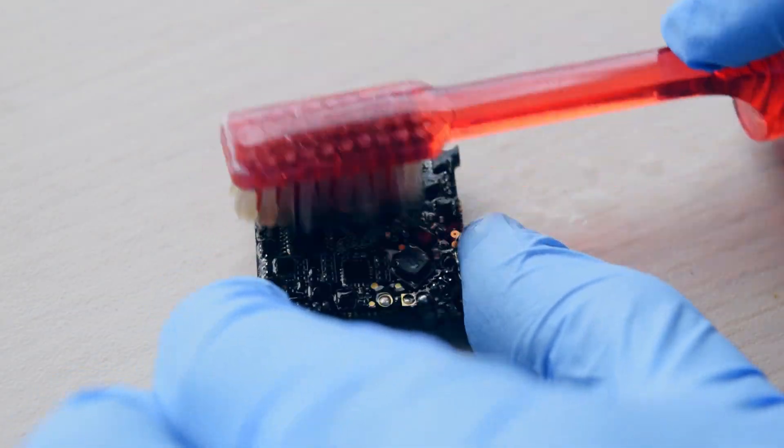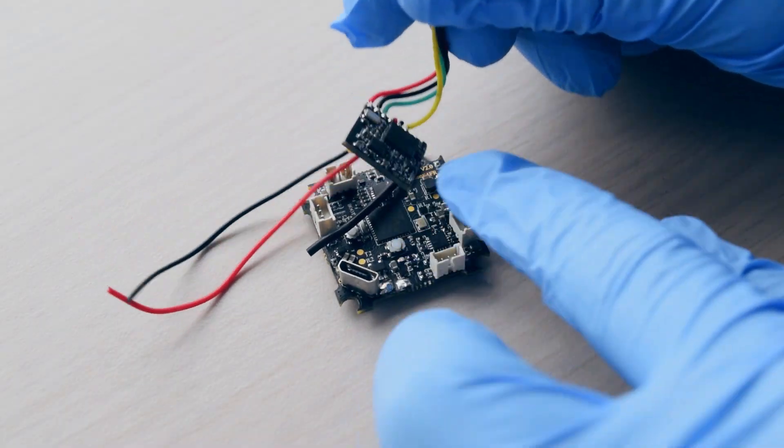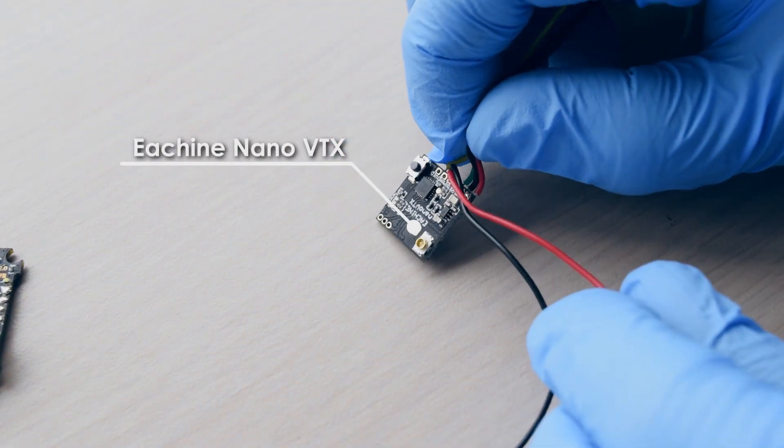I'll start by cleaning the flight controller with some rubbing alcohol and a brush. The first major upgrade will be the video transmitter, which I will be swapping with this ESG Nano VTX.